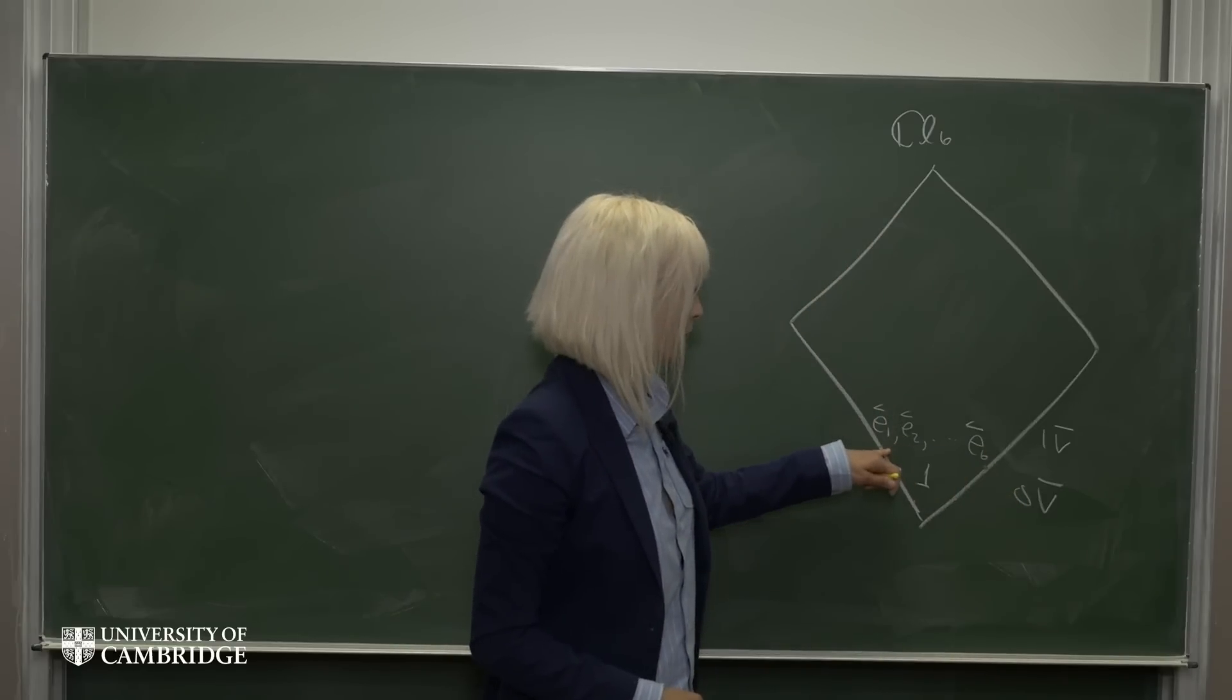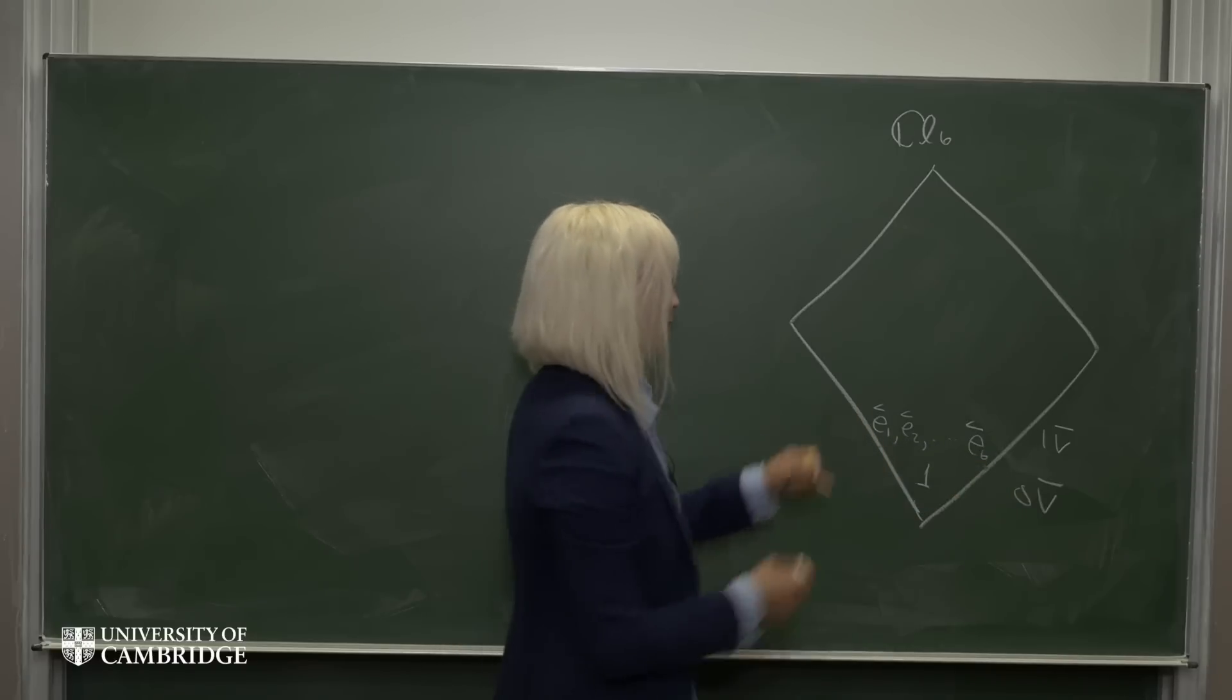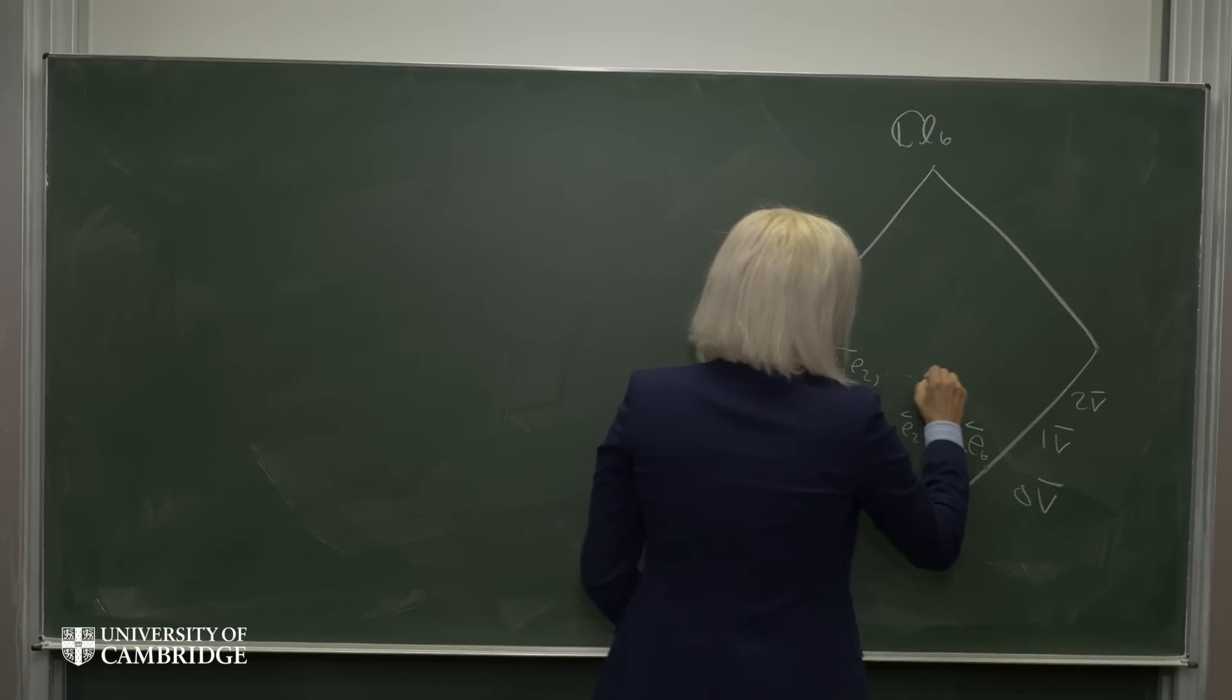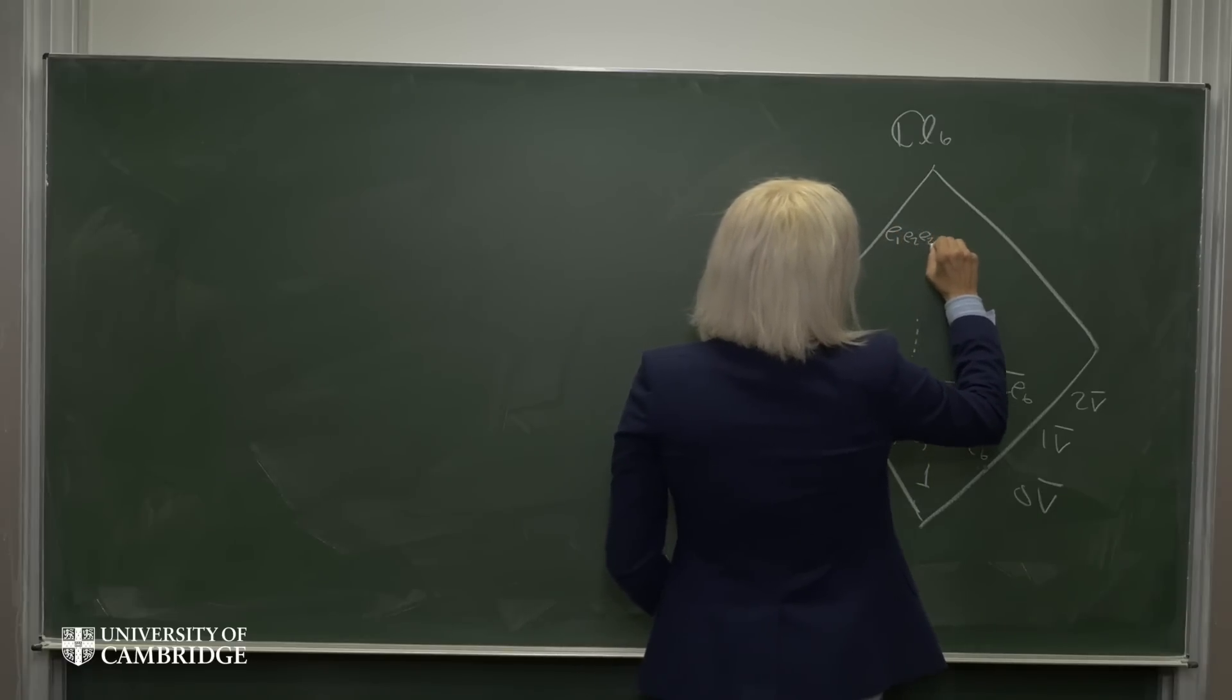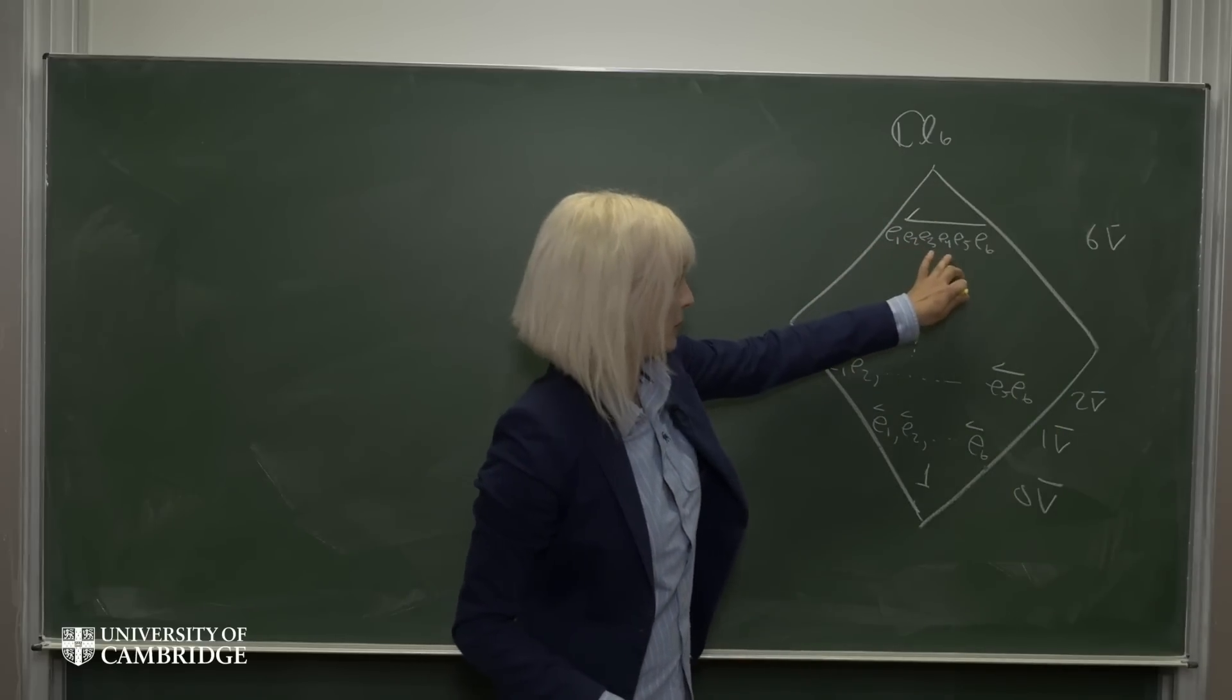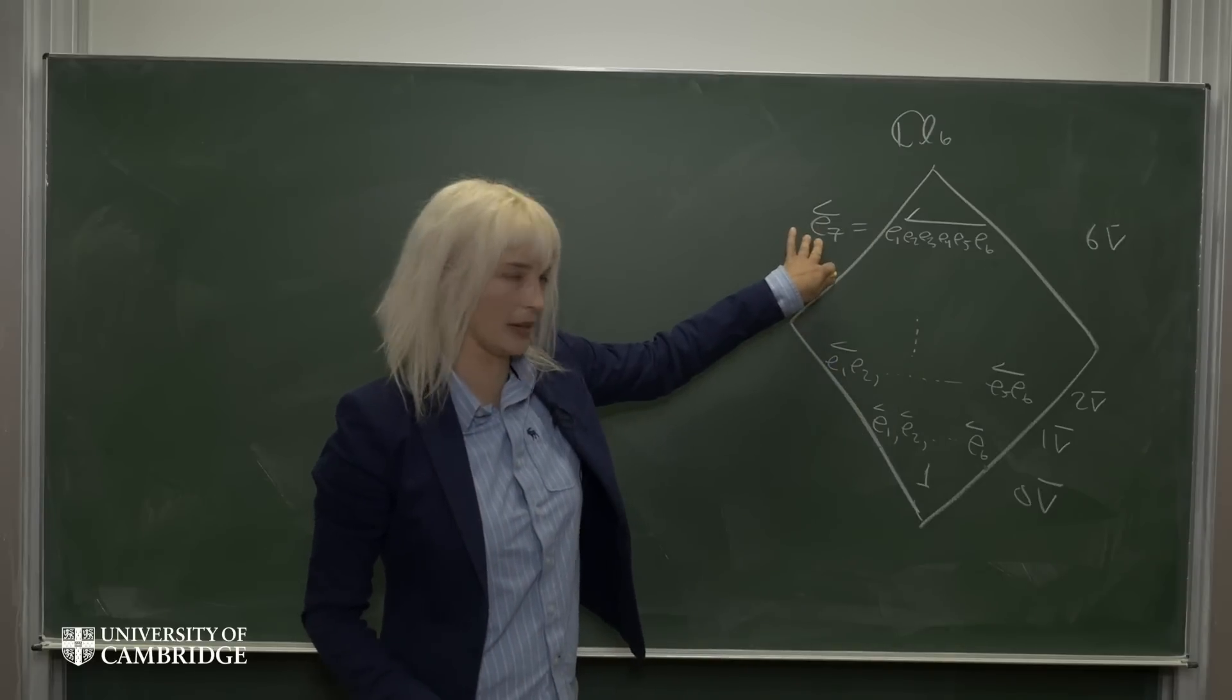So you might be wondering at this point why we have only e1 to e6. I mean, the octonions have imaginary units that go up to e7. On the next level up, we have bivectors. And we keep on building up these multi-vectors until we get to the top, where we have a six-vector. And it so happens that e1 times e2 times e3 times e4 times e5 times e6 gives e7. So this is where this extra imaginary unit went to.